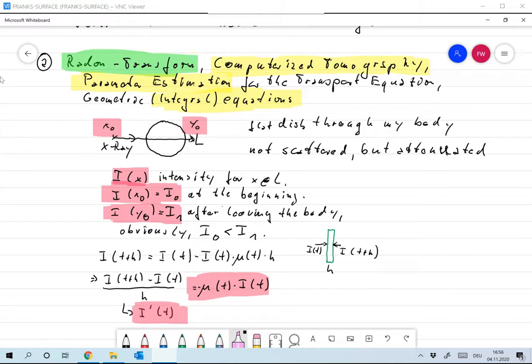Okay, we'll start off by modeling one single x-ray that travels through my body. So I have an x-ray source located at x0, I have an x-ray detector at position y0, these are connected by a straight line L. The region I'm looking at is a flat disk through my body, so I restrict myself to just a two-dimensional problem, not the three-dimensional problem we actually have.